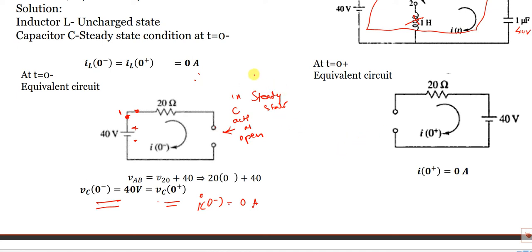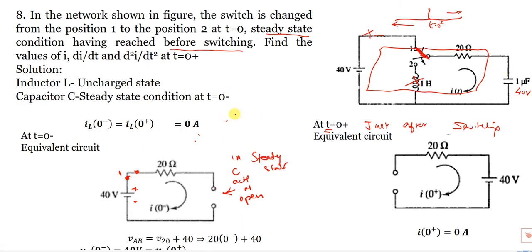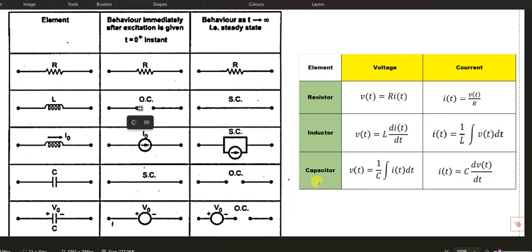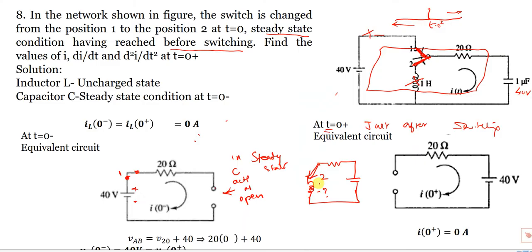Now at t=0 plus - just after switching - the switch changes from position 1 to position 2. Once connected to position 2, the capacitor is connected to the inductor. At t=0 plus, using the standard table: the inductor acts as an open circuit, and the capacitor acts as a short circuit. But if any initial voltage is present, just after switching the capacitor acts as a voltage source.